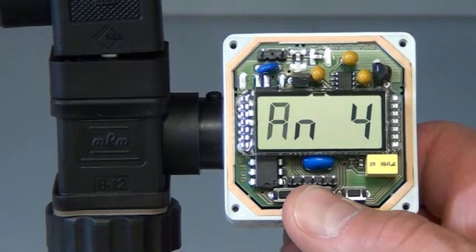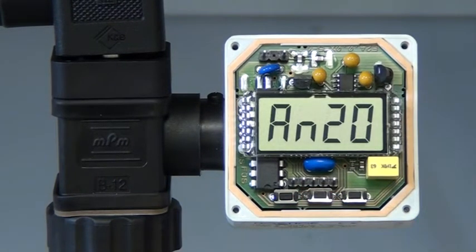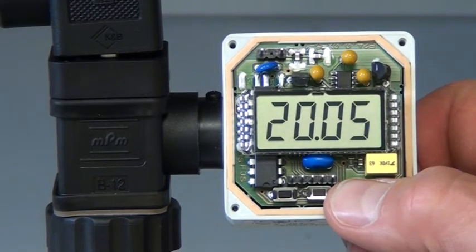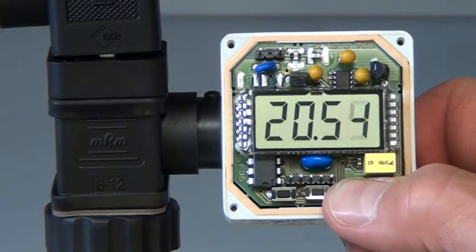To set the upper end of the range, depress the B button again until AN20 is displayed. Use the up C button and or the down A button to program the upper end of the range. For this demo, I will press the C button until the display reads 30.00.